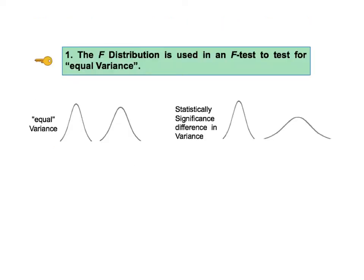In the book and in these videos, there are usually four or five keys to understanding, or KTUs, which give us the overall picture in a handful of key points. For the F distribution, the first key to understanding tells us that the F distribution is used in an F test to test for equal variance.